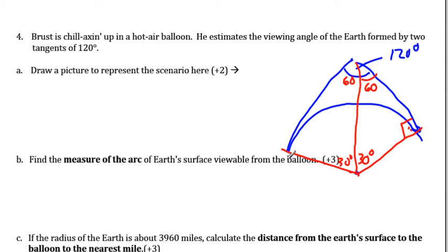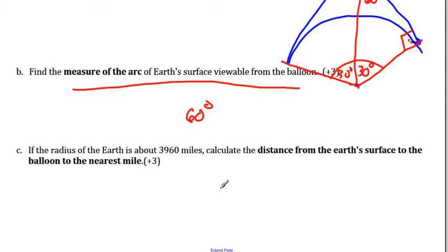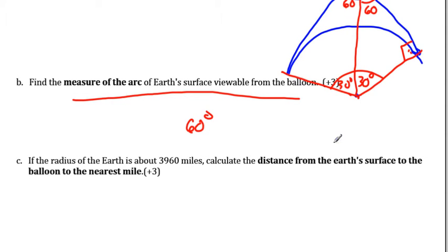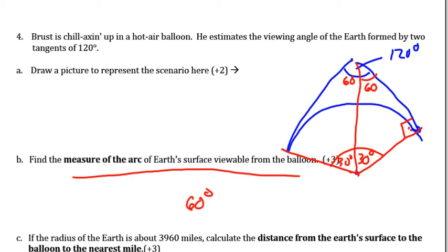The measure of the arc of the earth's surface viewable from the balloon is the two central angles combined: 30° + 30° = 60 degrees. For part c, if the radius of the earth is about 3960, we need to find the distance from the earth's surface to the balloon — specifically this distance. We know this piece is 3960 and this piece is also 3960, but let's call the whole distance y.